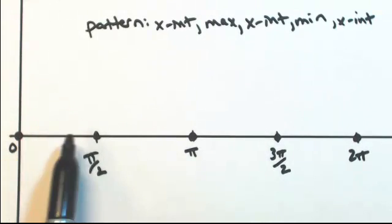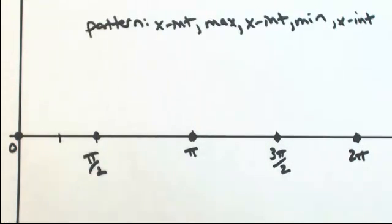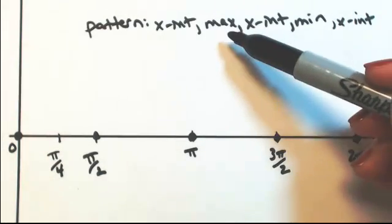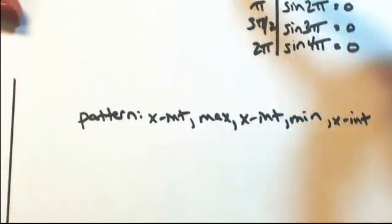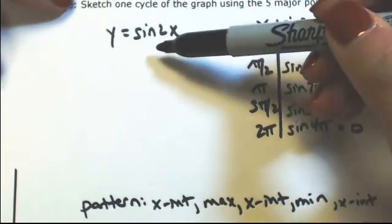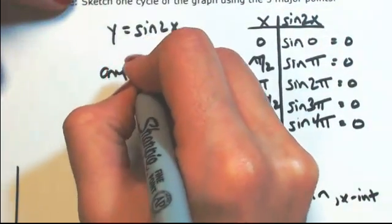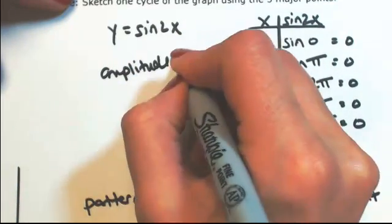So between the first two x-intercepts, halfway between that, which would be pi over 4, is going to be our max. Now looking back at the original function, in front of the sine 2x, there's a 1. So the amplitude is 1.